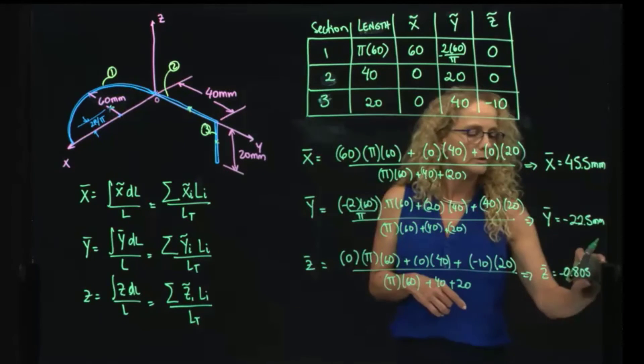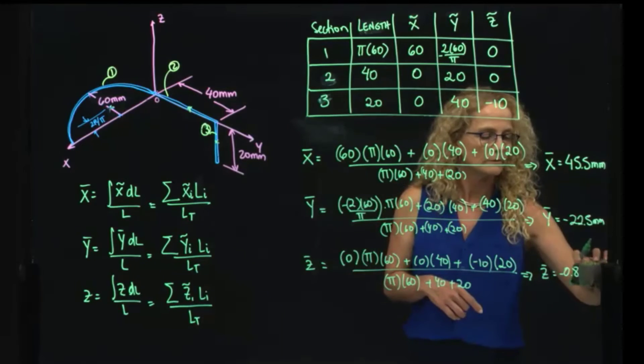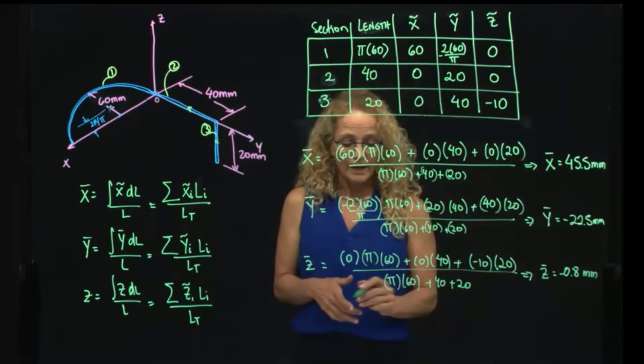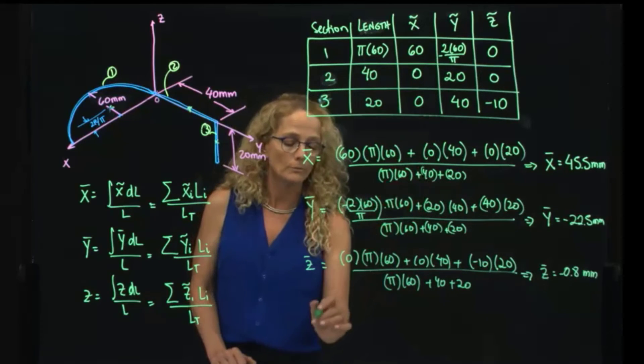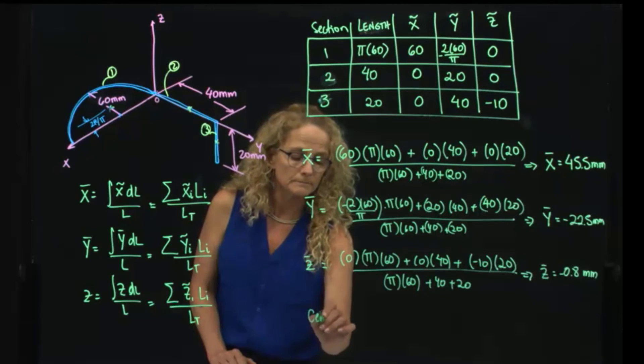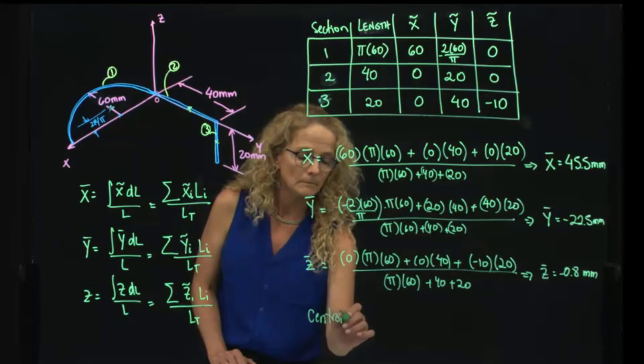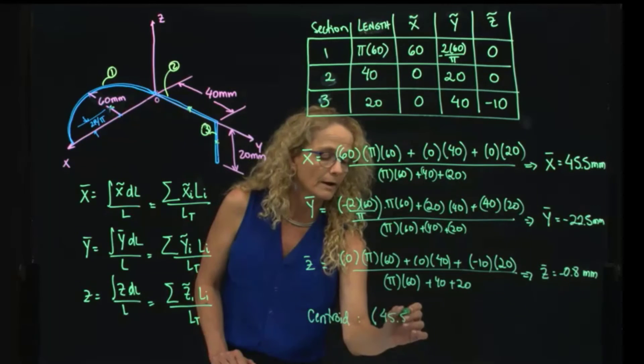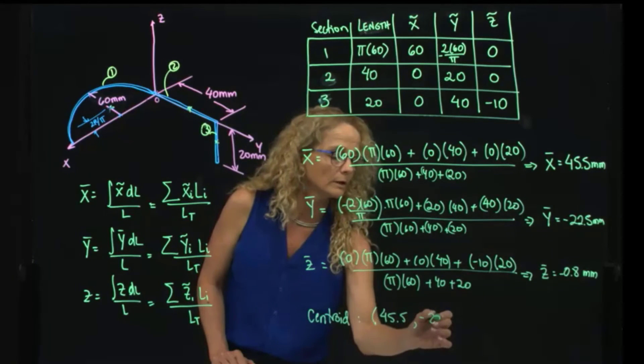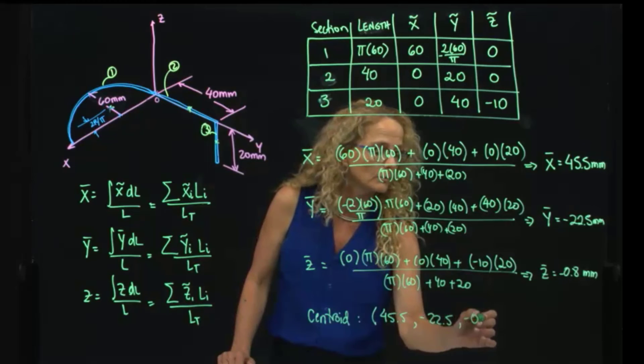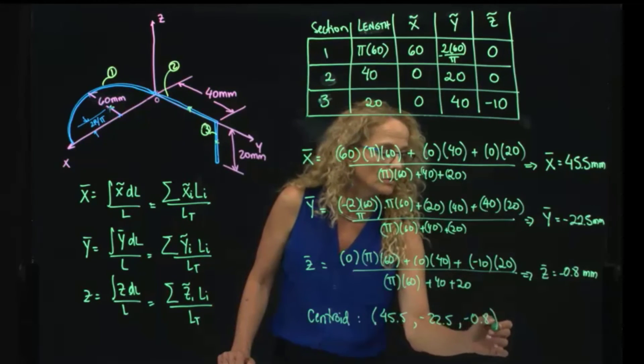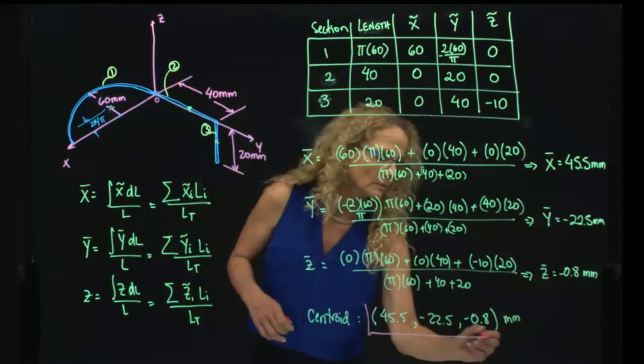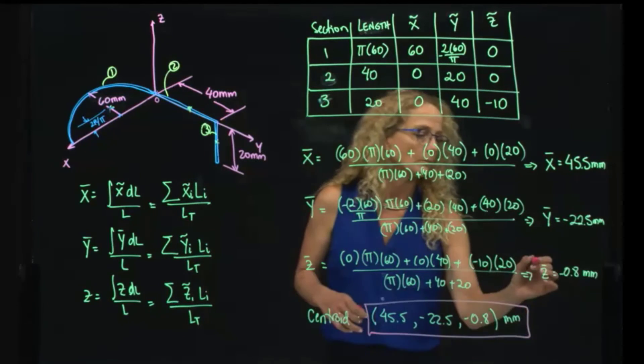So at the end, my location of my centroid is located at 45.5, negative 22.5, and negative 0.8, all that in millimeters, which are these numbers over here.